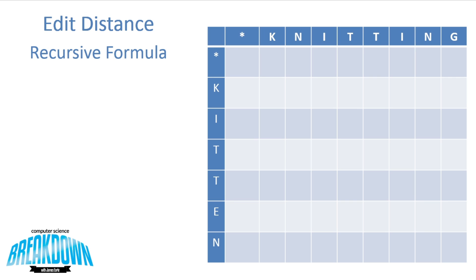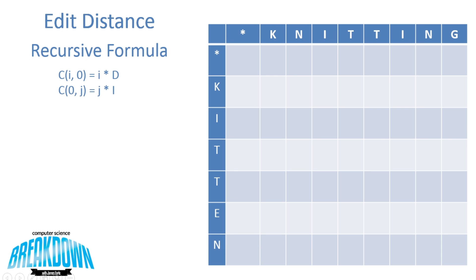Now that we've shown optimal substructure exists, we can derive the recursive formula and use it to fill in the table, so the optimal cost will be in the bottom right corner. The base case: we need to fill in the first column and first row. There's an extra column and row added to represent empty characters. To transform kitten into an empty character requires only deletions; to transform an empty character into knitting requires only insertions. So c at i and 0 equals i times the cost of a deletion, and c at 0 and j equals j times the cost of an insertion.